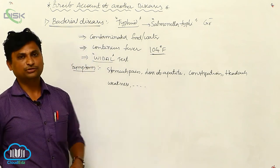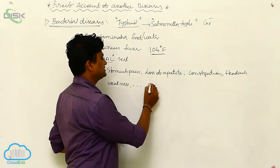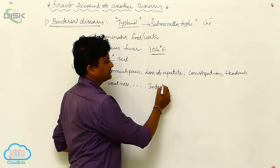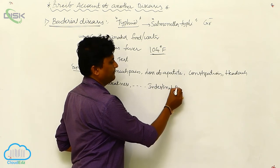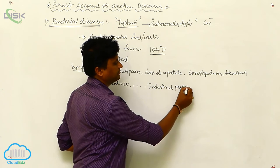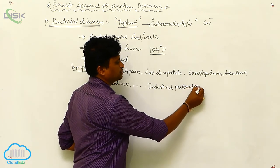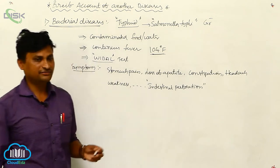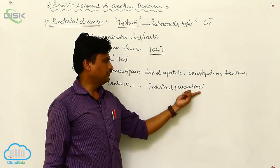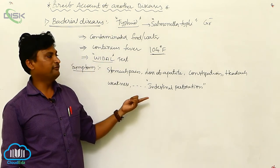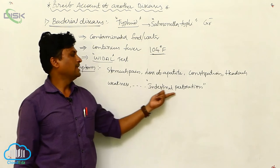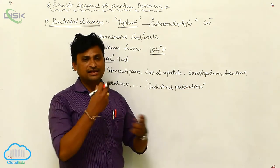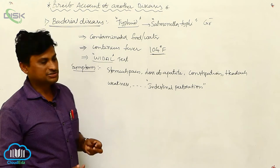A very important symptom is intestinal perforation — the formation of small holes in the intestine area. In highly infected cases, typhoid fever can lead to intestinal perforation, which can be fatal and lead to death.